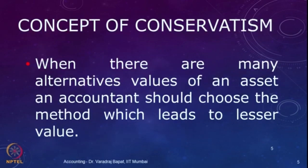So when alternative values of assets are available, accountants need to choose the one which leads to the lesser value. There is a possibility that a particular asset can have 2 values — as per one method the value is 50,000 and as per the other method it is 45,000. To be on the safer side, as per the concept of conservatism, we will value the asset at 45,000. Because instead of showing excessive value, it is better to be on the conservative side — we do not want the value in the balance sheet to be inflated. We are okay if it is slightly on the lower side.